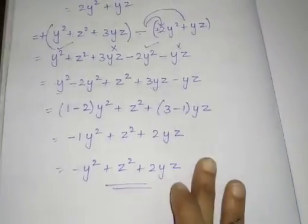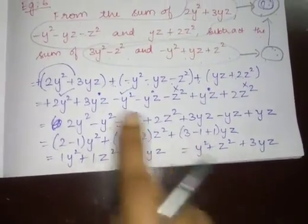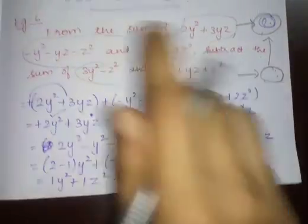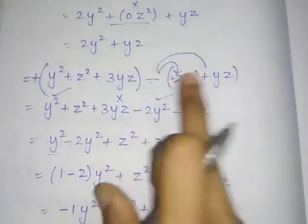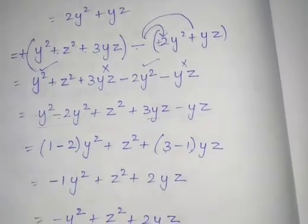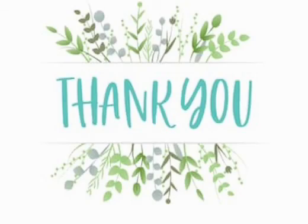We have to stop our simplification at -Y² + Z² + 2YZ because all three values are unlike terms. Today's class we have discussed the addition and subtraction of algebraic expressions, and we solved a few example problems. I hope you all understood. Thank you.